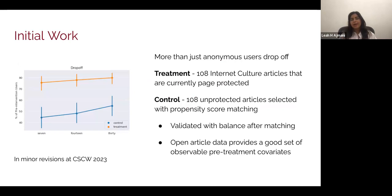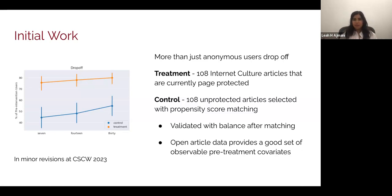Specifically, for work under minor revisions, at CSCW we looked at a uniquely participatory category of Wikipedia — the internet culture category — and examined 108 articles that are currently page protected. When we look at drop-off, meaning the number of users who edited before a page was protected but didn't edit after, we find about 75% of users dropping off at 7, 14, and 30 days after a page is protected.